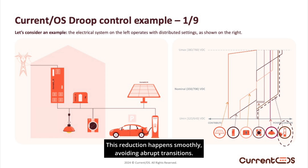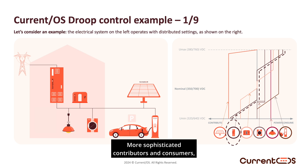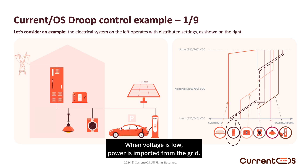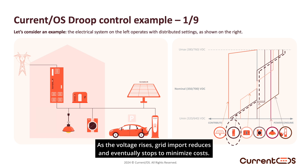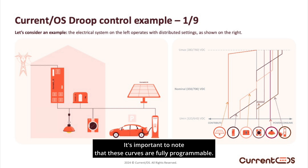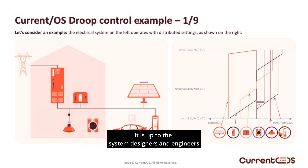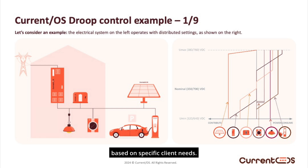This reduction happens smoothly, avoiding abrupt transitions. More sophisticated contributors and consumers, like the public grid connection, operate differently. When voltage is low, power is imported from the grid. As the voltage rises, grid import reduces and eventually stops to minimize costs. If the voltage continues to rise due to excess power, the system begins exporting energy to the grid. It's important to note that these curves are fully programmable — this is just an example. For each project or installation, it is up to the system designers and engineers to define these thresholds based on specific client needs.